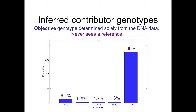An inferred contributor genotype is shown on this slide. Of the 100 or so possible allele pairs at this locus, the data has concentrated the probability into just a few possibilities, most of it at the 17-19 allele pair. This separation is completely objective — it is determined only from the DNA data and has no knowledge of the suspect with whom the comparison will be made. At every locus, a separated genotype is a probability distribution of different probabilities on the y-axis for different allele pair possibilities on the x-axis, replicated for every locus.